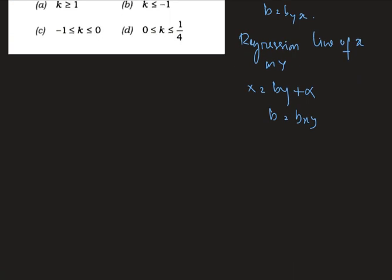Now we already know that bxy multiplied by byx equals r squared, which is the square of the correlation coefficient.